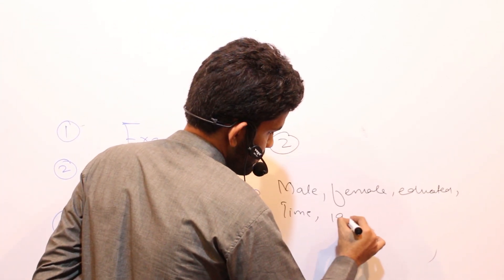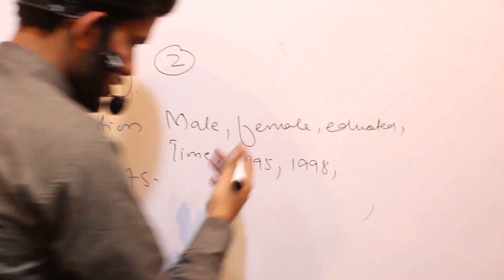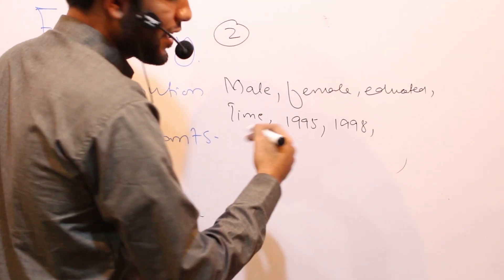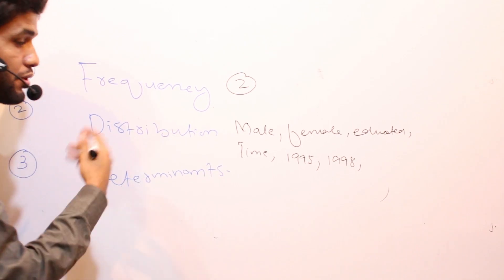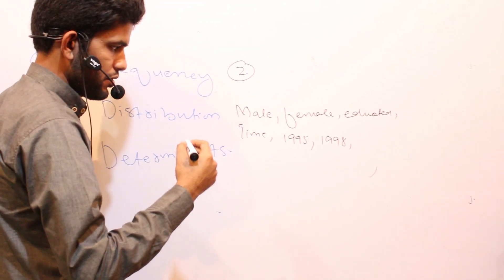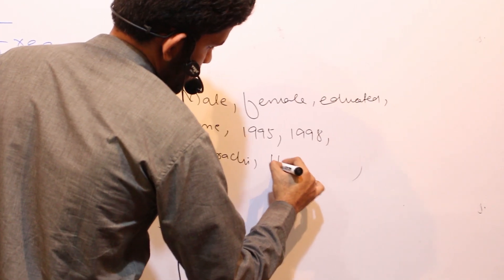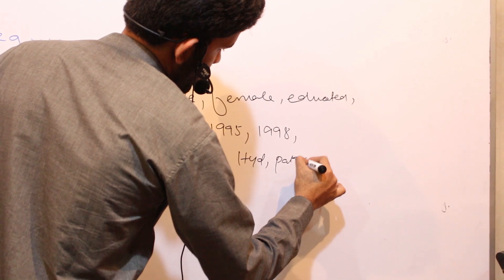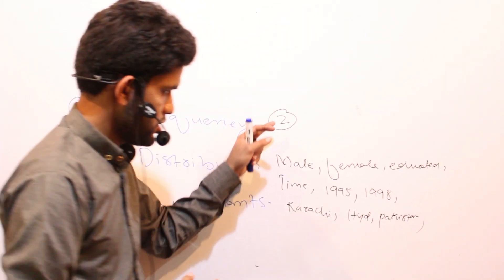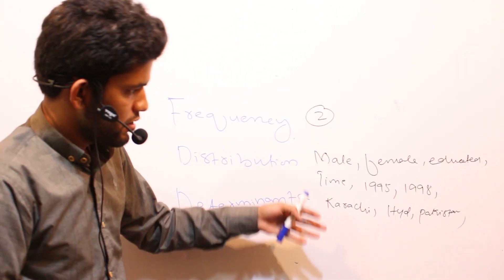In time, we can classify them — for example, 1995 or 1998. We can also classify by area of variation — distributing and classifying cases by place. So distribution can be defined as the variation of cases by person, time, and place.